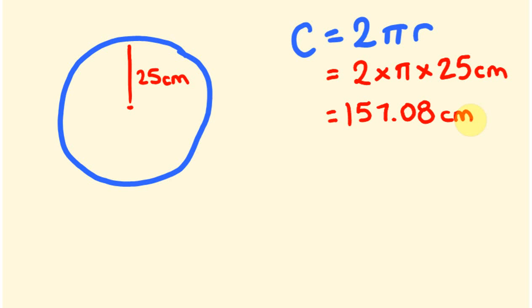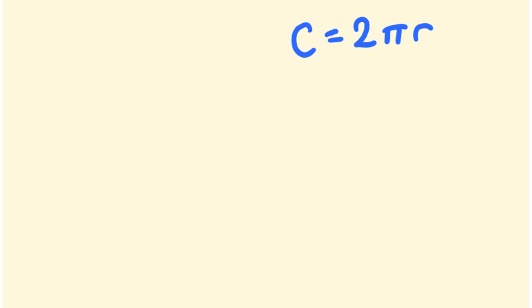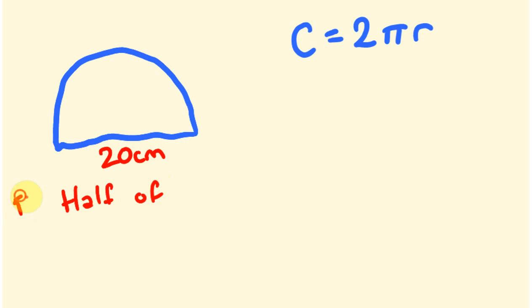What about one more? The next question I'm going to ask — say you might be given a question that looked like this: work out the perimeter of a semicircle where the diameter is 20 centimetres. How would you work out this distance around the outside? Well, you can see first off that this is half of the circumference, so we're going to work out half the circumference. Half of C, or this perimeter, is going to equal half the circumference plus the diameter. This diameter is 20, so the radius equals half the diameter — so the radius equals 10 centimetres.